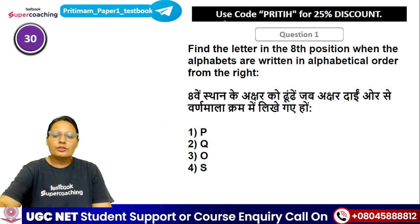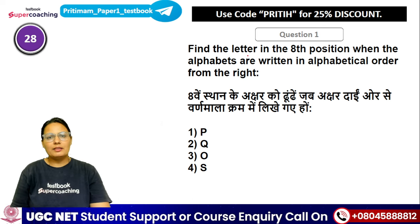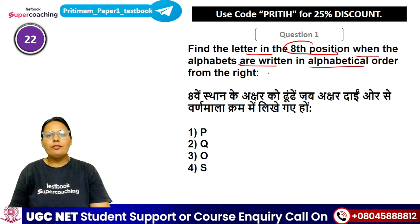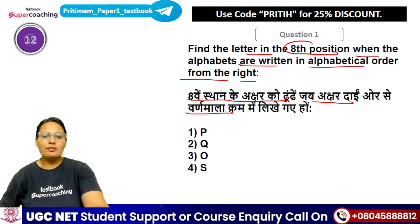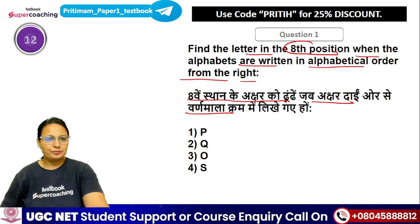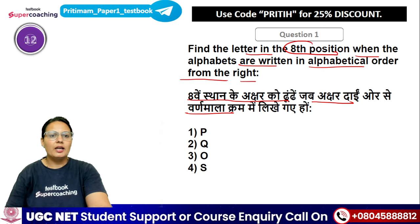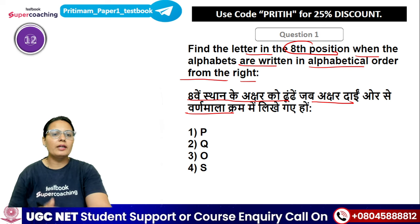The first question is on your screen and 30 seconds is on the timer. Find the letter in the 8th position when the alphabets are written in alphabetical order from the right. Arrange all the alphabets in reverse order from the right hand side, and then find the letter in the 8th position.